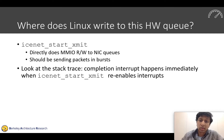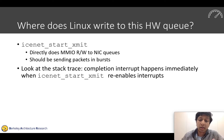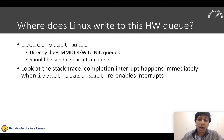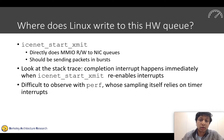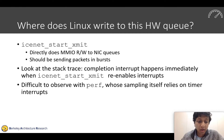Looking at the stack trace and instruction trace from Tracer5, we can see that the completion interrupt — indicating that a buffer can be reused after a send completes — is actually happening immediately when icenet_start_xmit re-enables interrupts after writing one descriptor. This is difficult to observe with perf because perf sampling relies on timer interrupts, and a more complicated mechanism like NMIs isn't currently implemented for RISC-V.